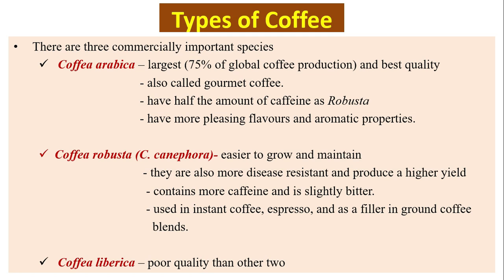There are three commercially important species. Coffea arabica is the largest one, accounting for 75% of global coffee production. The best quality coffee is made from Coffea arabica. It is also called gourmet coffee. It has half the amount of caffeine as Robusta and has more pleasing flowers and aromatic properties.